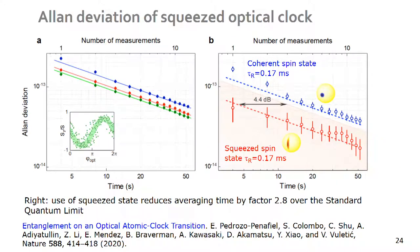This summarizes our results: Allan variance versus integration time, for a relatively short Ramsey time of 0.17 milliseconds. The blue data correspond to the coherent state, with the standard quantum limit indicated. With spin squeezed states we achieve 4.4 dB improvement, corresponding to a factor of 2.8 improvement in integration or averaging time. The absolute accuracy is not very good — it was really limited by our laser — but we are improving the laser, and you have seen from June's talk some preliminary results with much longer Ramsey times. Basically this will improve as you make the Ramsey time longer with a better laser.